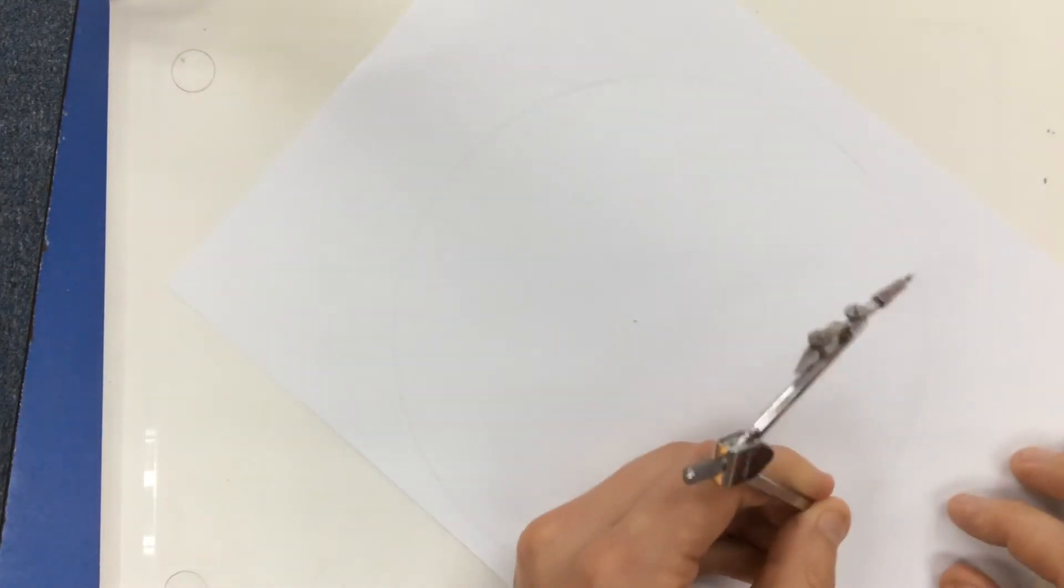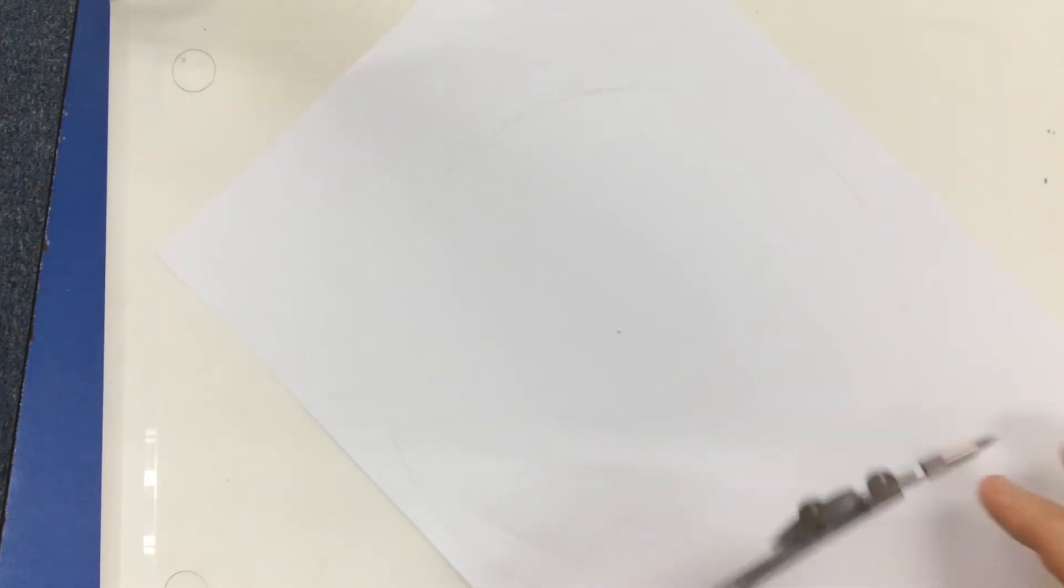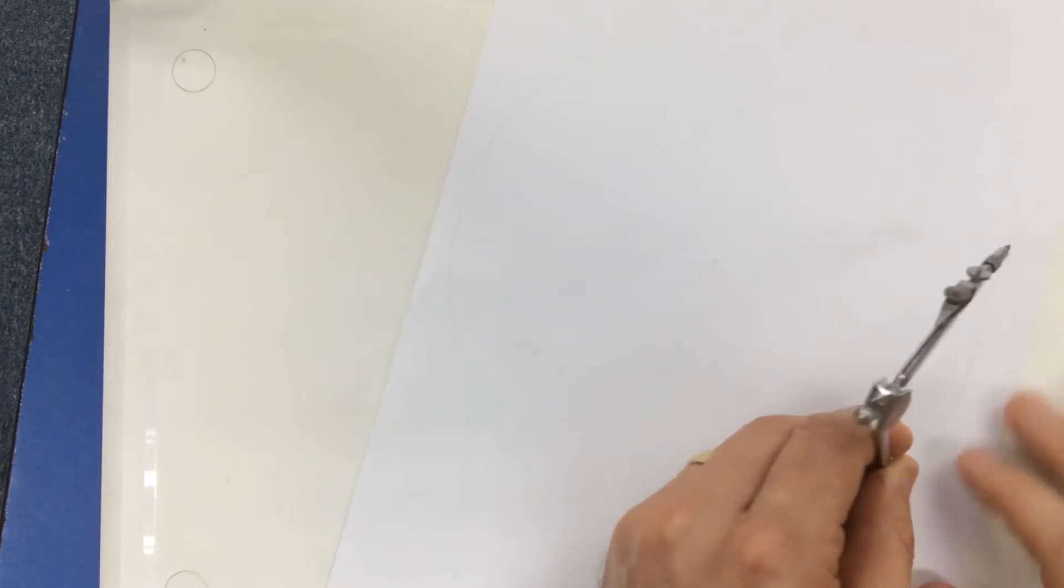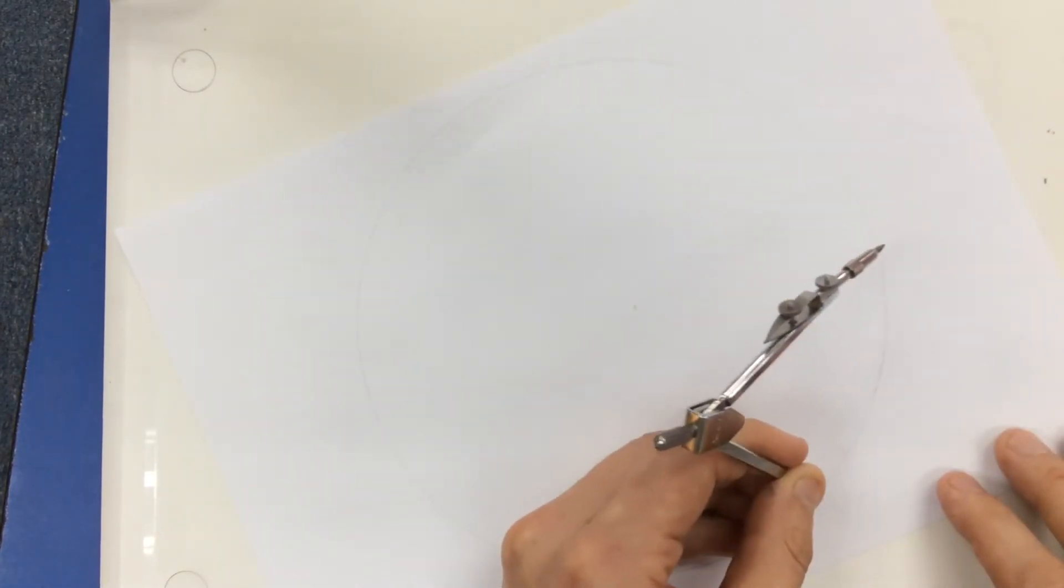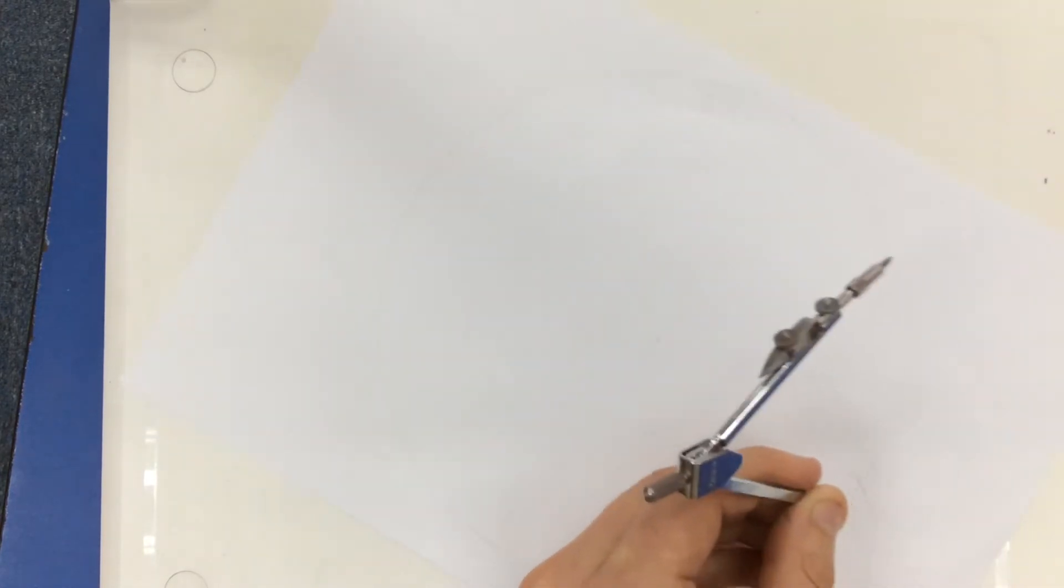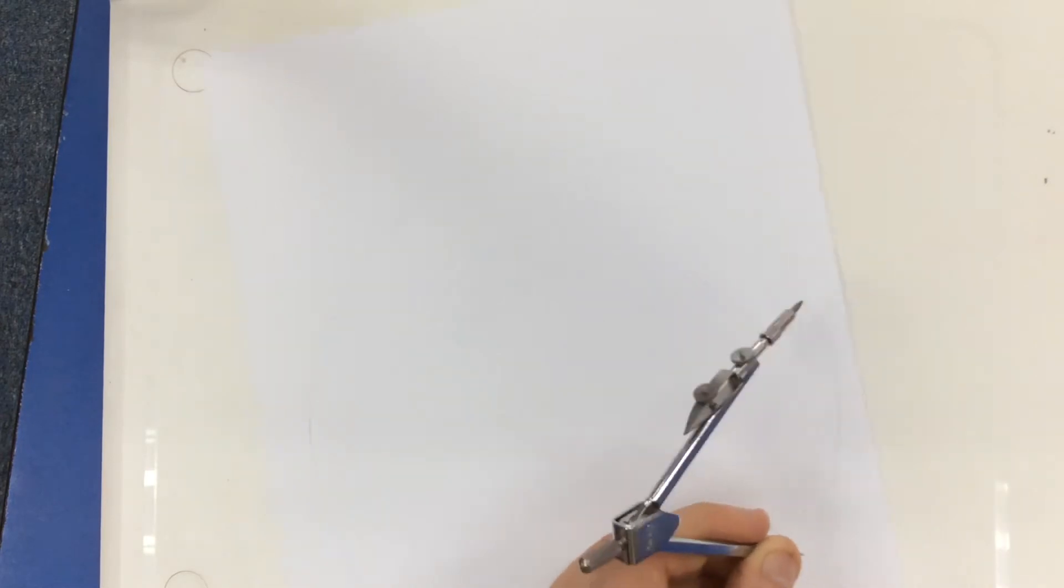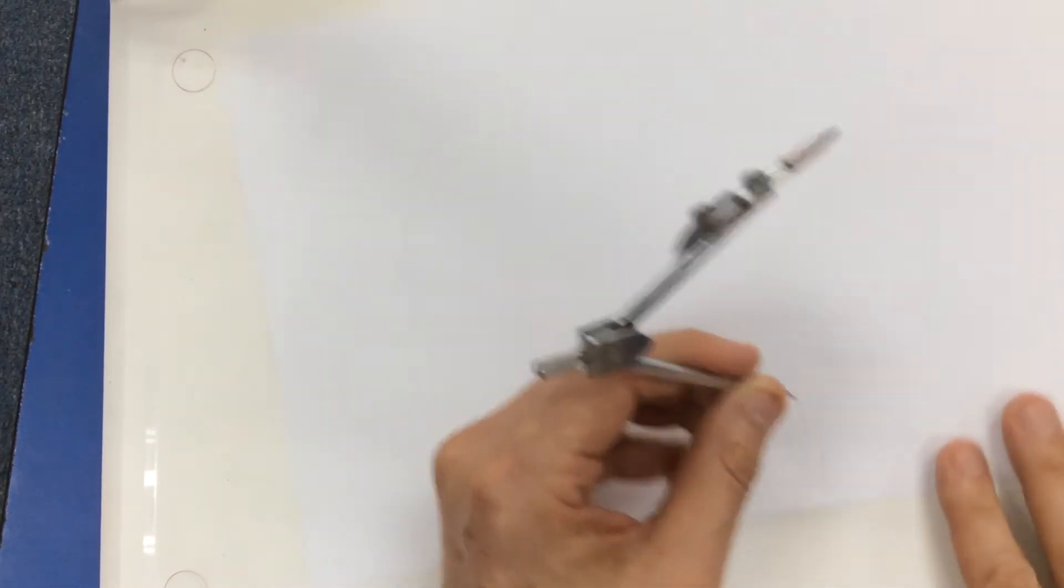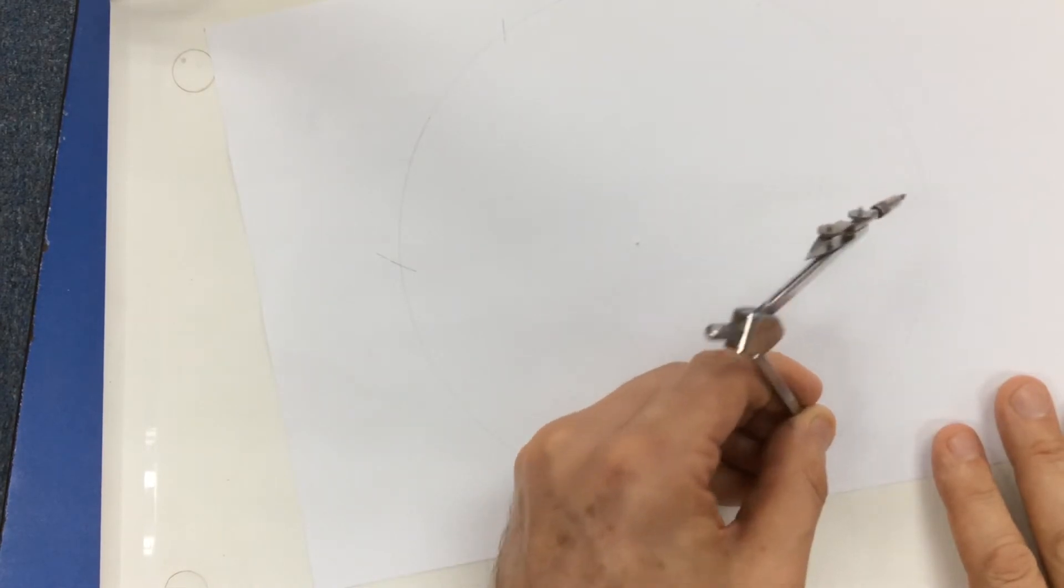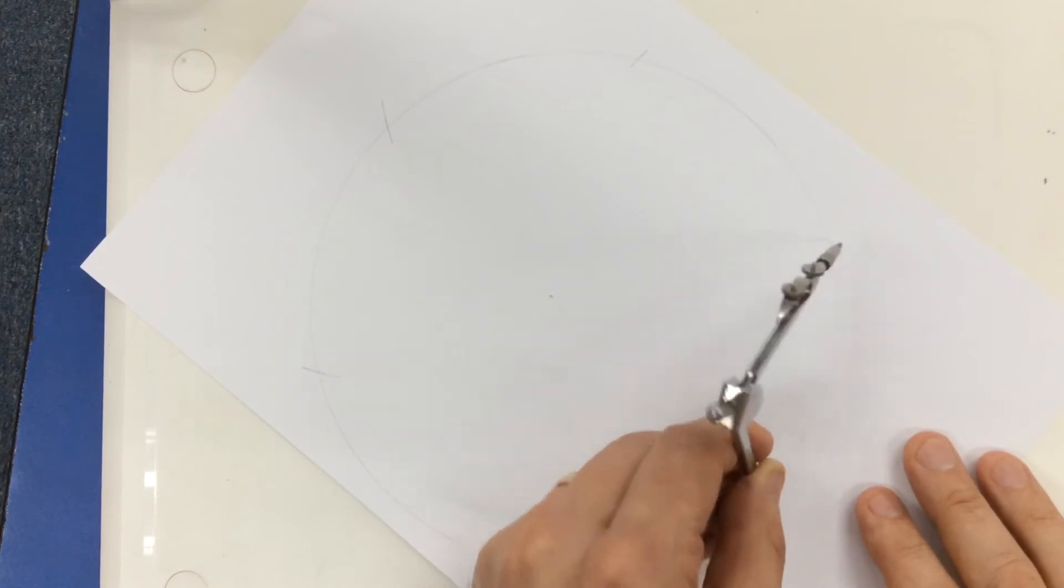Now what I'm going to do, I'm going to start with my point anywhere on the circle and I'm going to mark off that radius. I've got to keep the radius unchanged and keep moving around your circle until you've got six of these points. And make sure you hit those points as accurately as you can. Hopefully this will take me back where I started. Good.